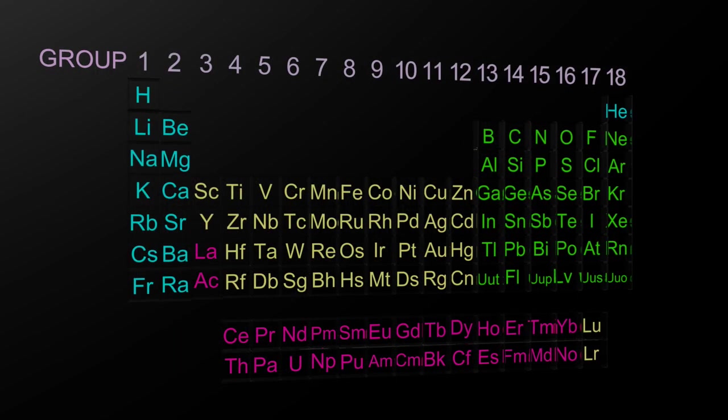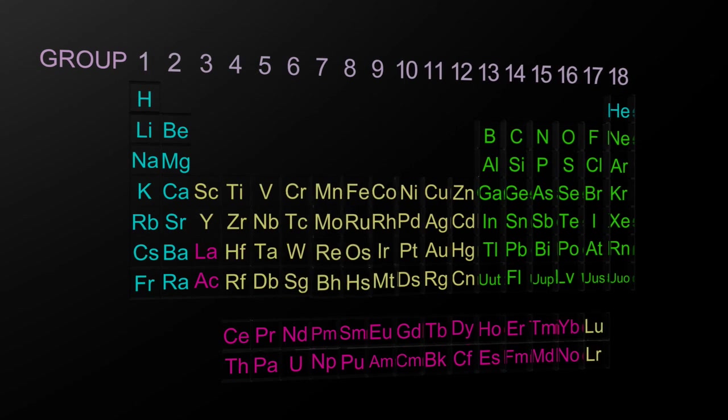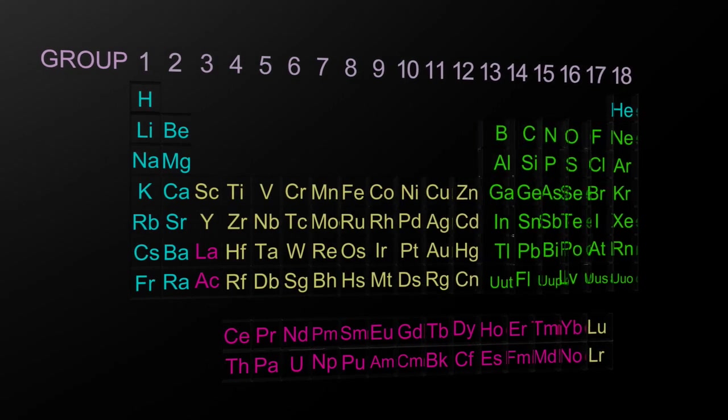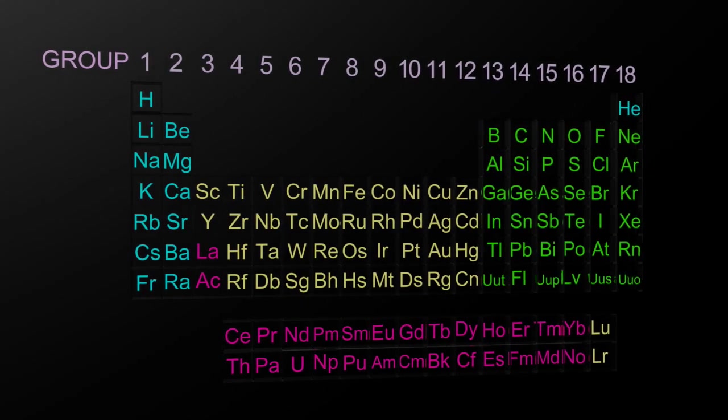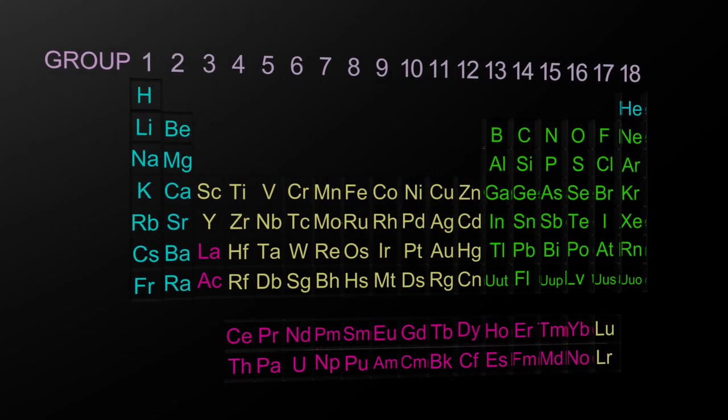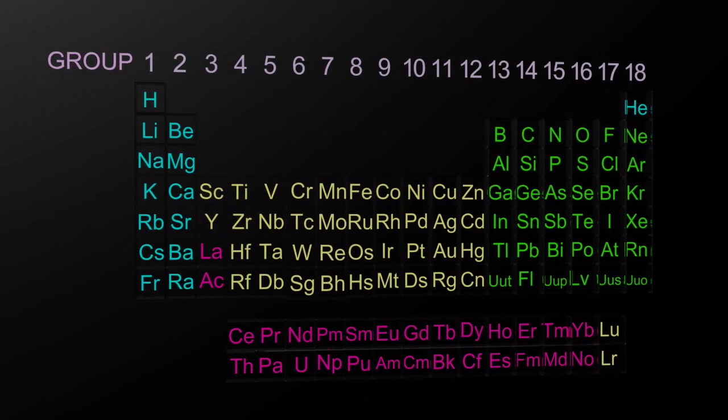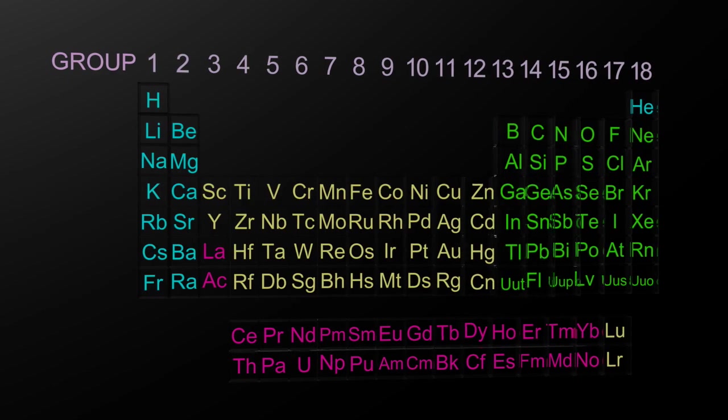Groups are numbered 1 to 18, and the groups are columns. Don't worry about the ones at the bottom — they have no group numbers.